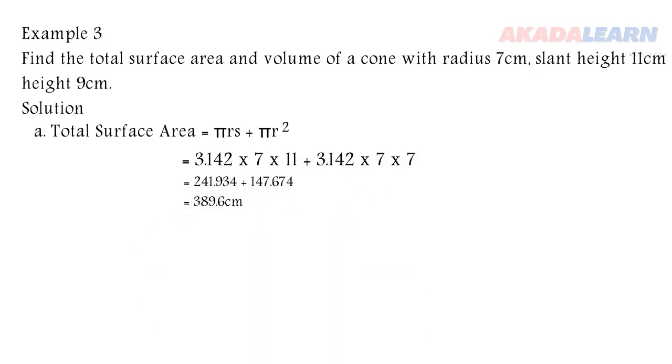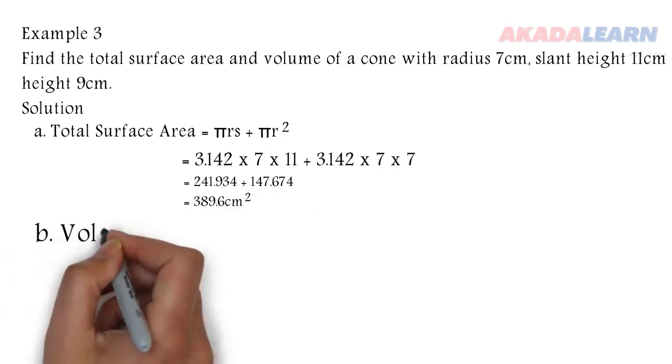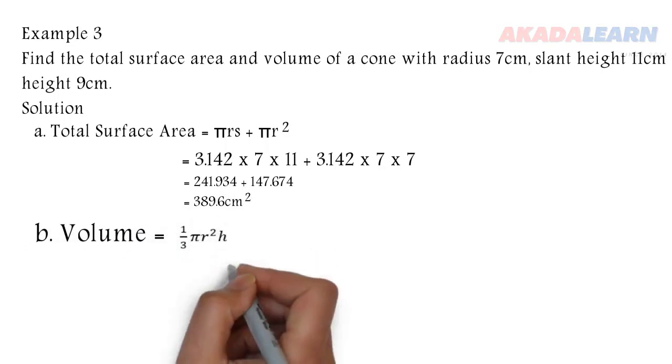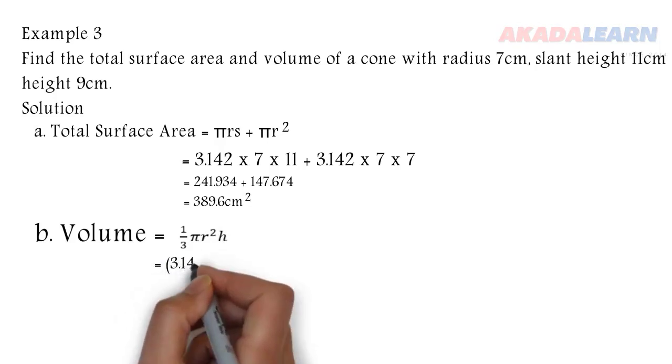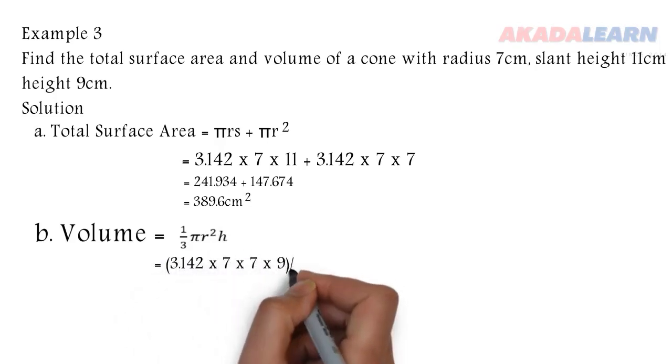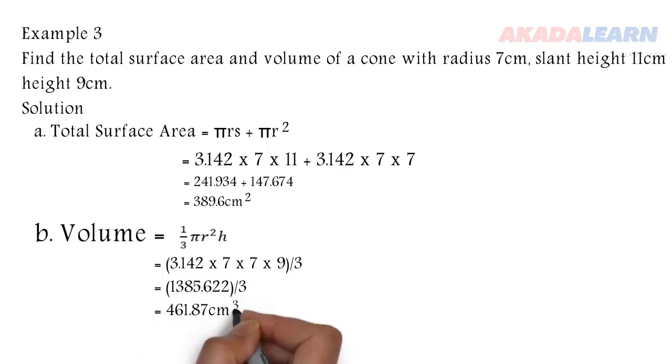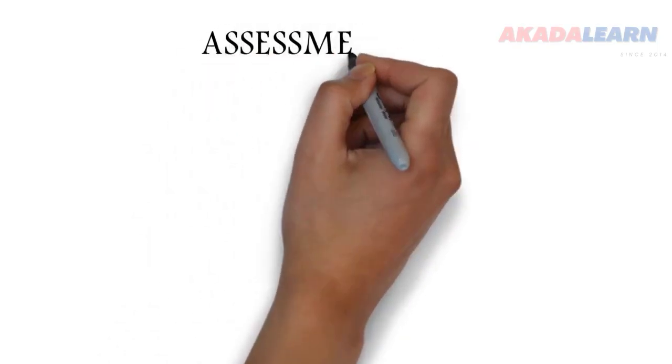The volume is given by πr²h all over 3. First we put in our value of π, then our value of radius, then the height, everything divided by 3. Our volume for the cone is 461.87 centimeters cubed. Right here I have an assessment question to see how far you've understood the video.